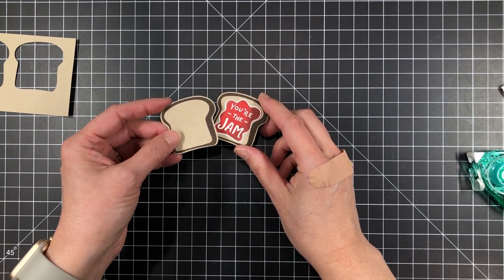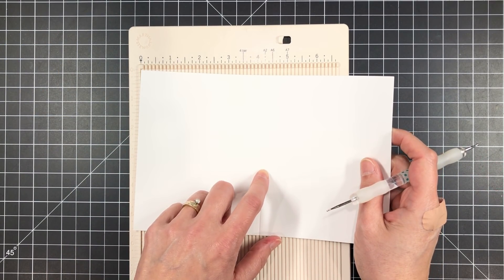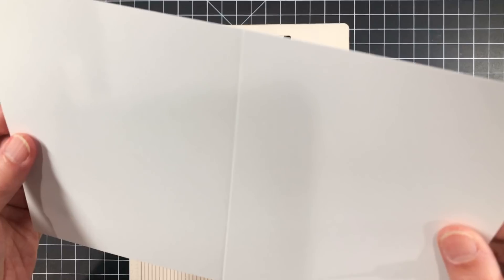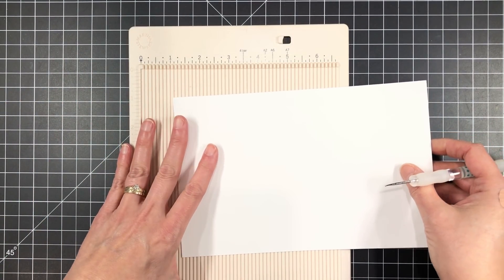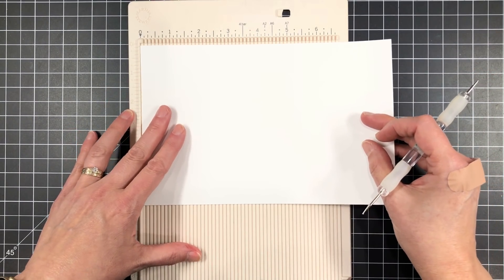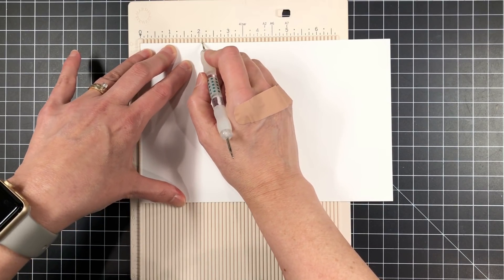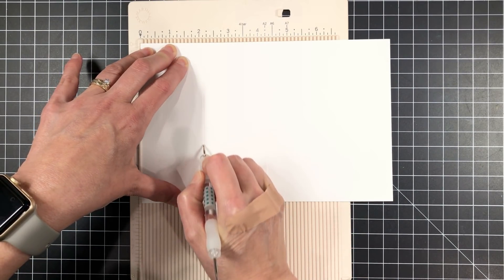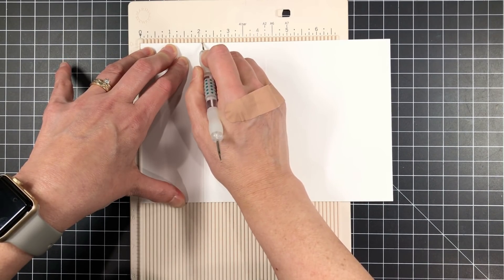I'm going to take those pieces at this point and toss them in a bowl so I don't lose them. And I'm making an A2 card. I've already scored it at four and a quarter inches. So this was eight and a half by five and a half. And then I scored in the middle for the gutter at four and a quarter inches. And then I need one more score line. So I'm going to line this up and score again at two and one eighth. So I'm going to split the difference there on the front portion of my card.